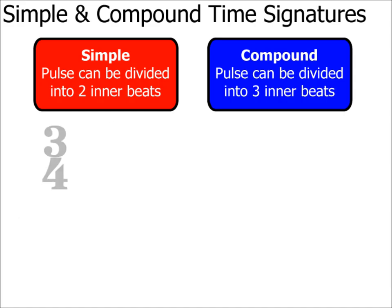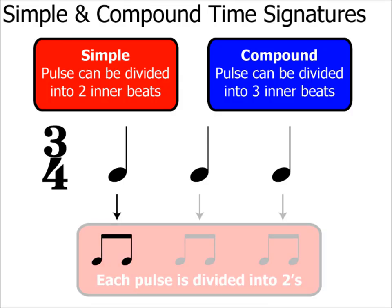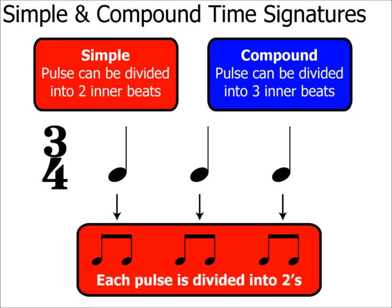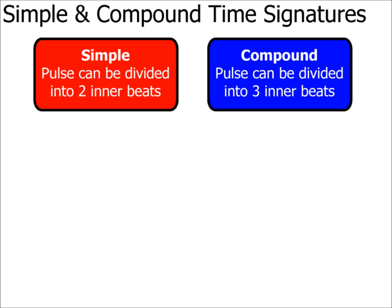Let's look at another time signature: 3/4. We note that there are three crotchet beats per bar. Happy Birthday is in 3/4 — sing it if you need to and tap your feet to the pulse. There's also an anacrusis at the beginning; the tune actually starts on beat 3. You'll soon feel that there are three pulses per bar, so the pulse is the same as the beat — three crotchets. We split one crotchet into equal parts and get two quavers, so 3/4 is a simple time signature. I'll look at more time signatures in part three, including 3/8, which is a bit of an anomaly.